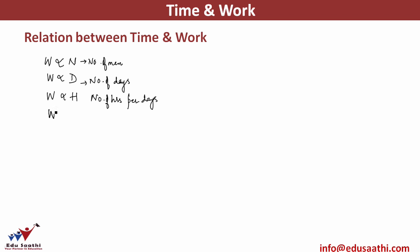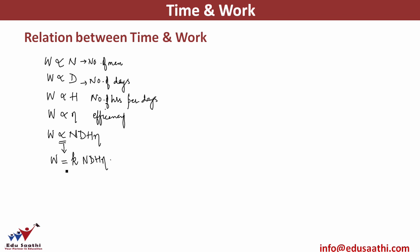Work done is also directly proportional to efficiency — the more efficient the person, the more work they can do. Combining all factors: work done is directly proportional to the number of men, number of days, number of hours per day, and efficiency. To remove the proportionality sign and convert it into equality, we introduce a constant of proportionality K, giving us the work equation.